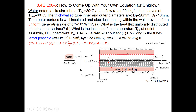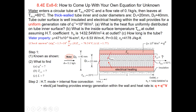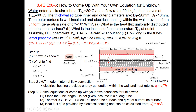We need to find how long the tube is. This is the water property table. Step 1: this is what we know and what we are looking for. Step 2 confirmed: there is internal flow convection and electrical heating providing energy generation within the wall. Therefore, the heat rate can be calculated from Q equals Q-triple-prime times the volume of the wall.